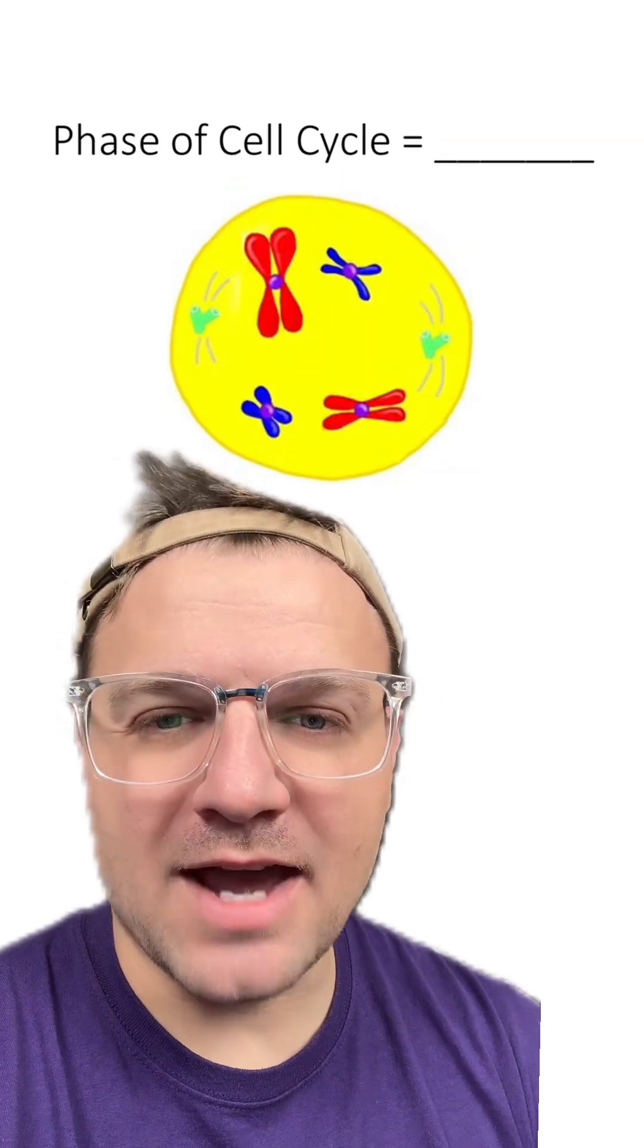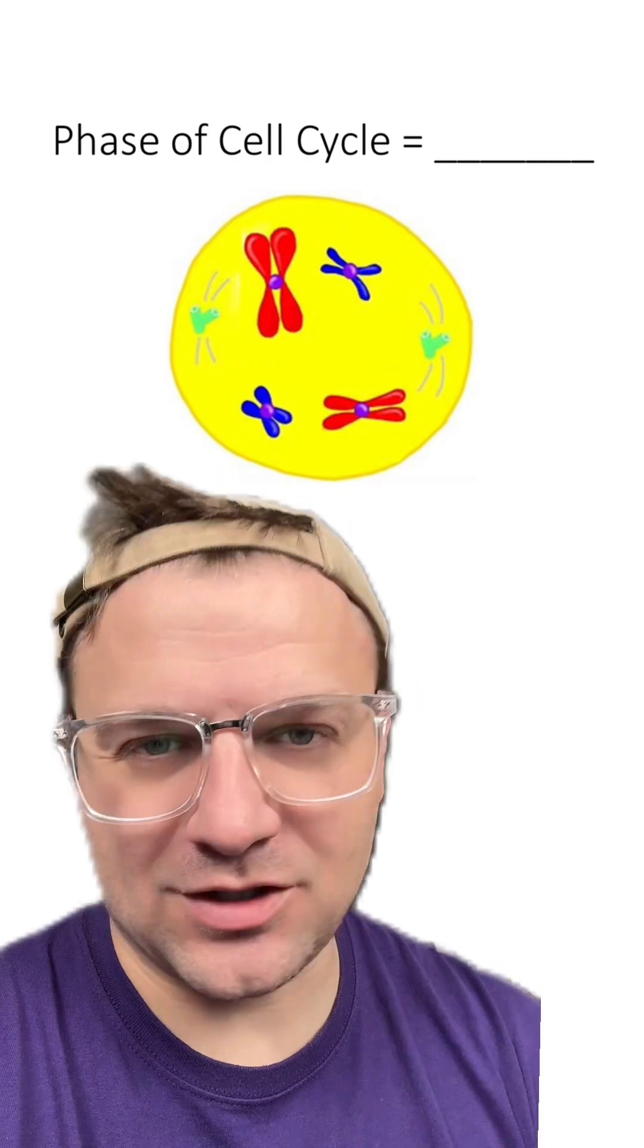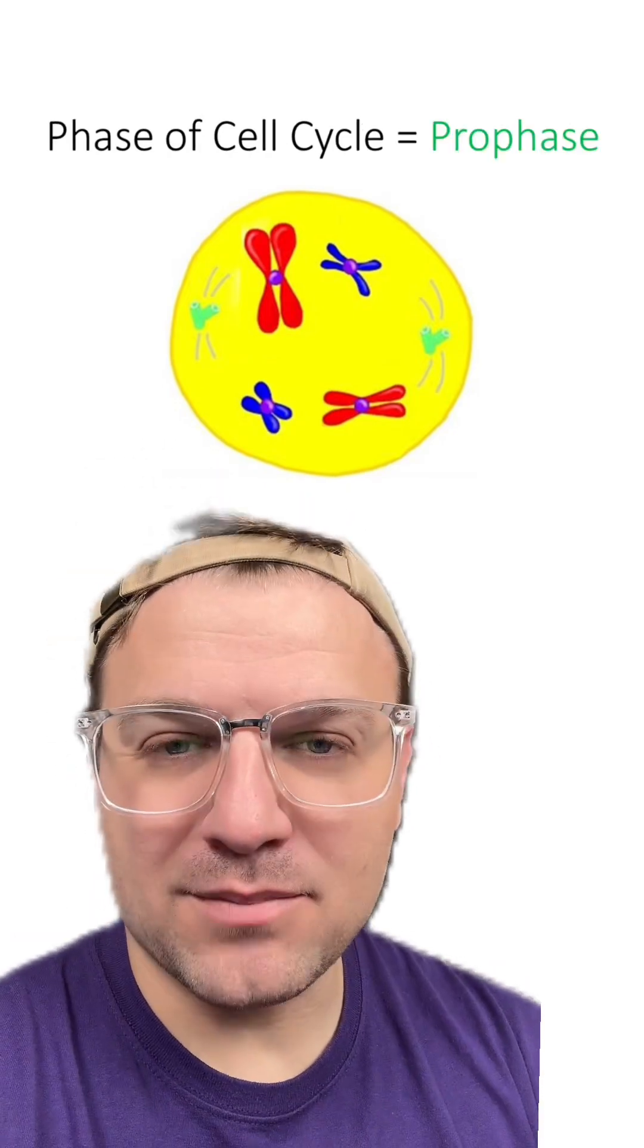Here's our next one. You can see the chromosomes have condensed, but the spindle fibers have not attached yet. This cell is in prophase.